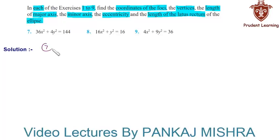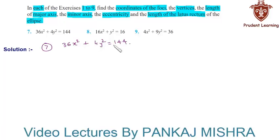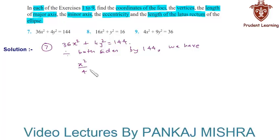In question 7, the equation of the ellipse given is 36x² + 4y² = 144. First, we need to make the right-hand side equal to 1 so as to make it look like standard form of an ellipse. Therefore, dividing both sides of this equation by 144, we have x²/4 + y²/36 = 1.